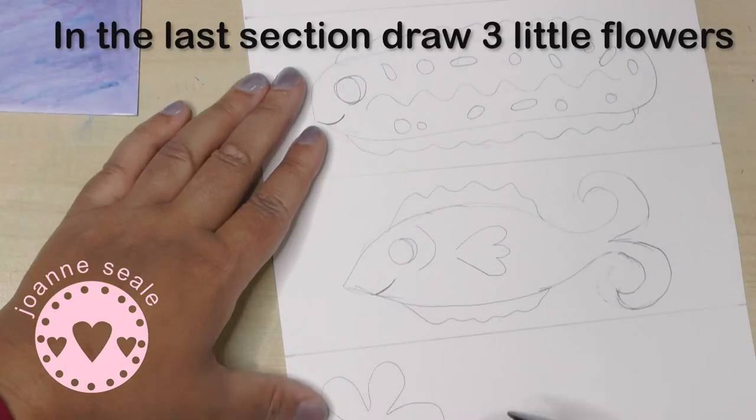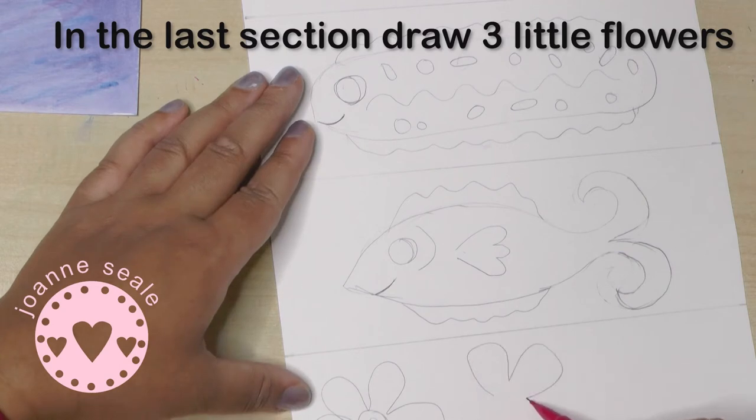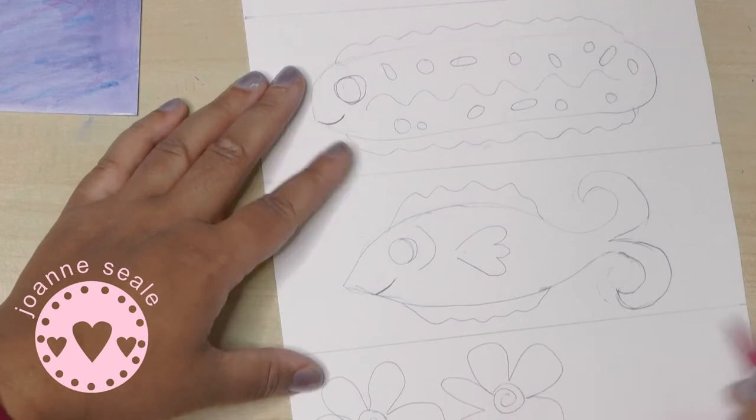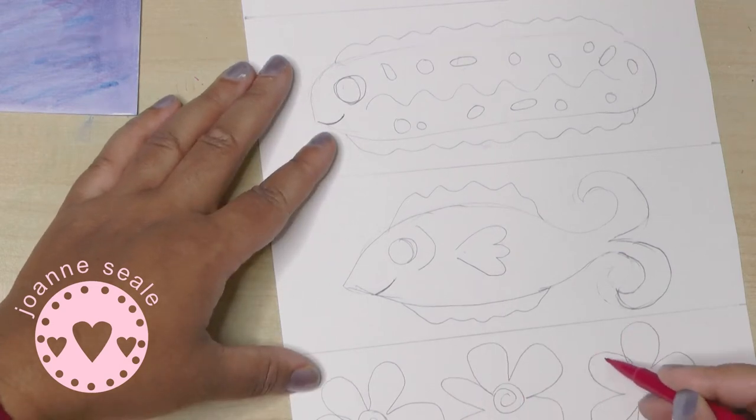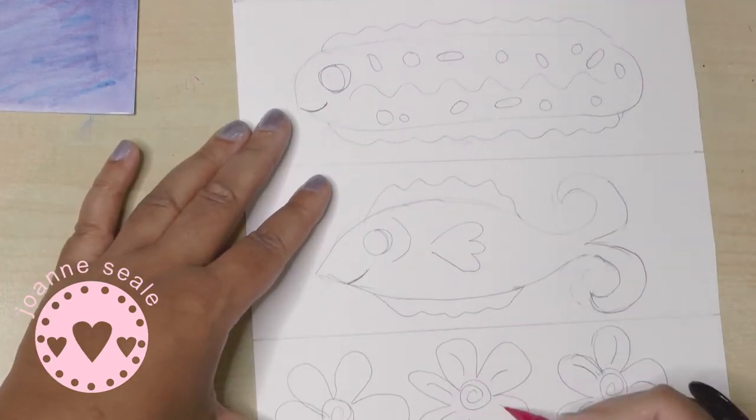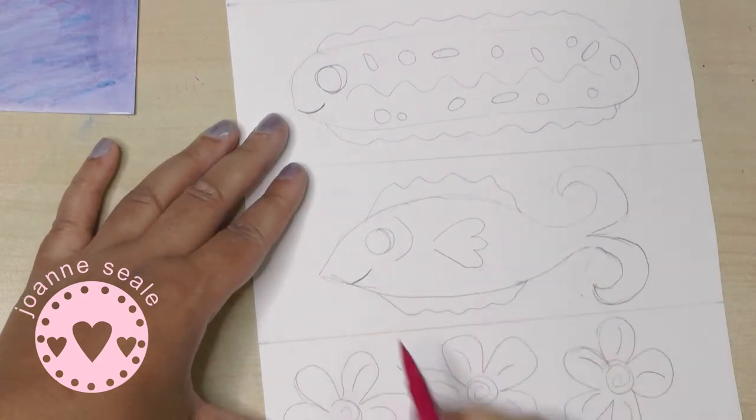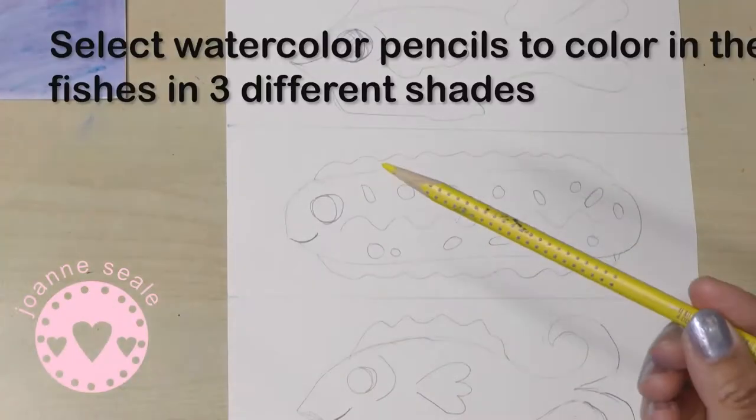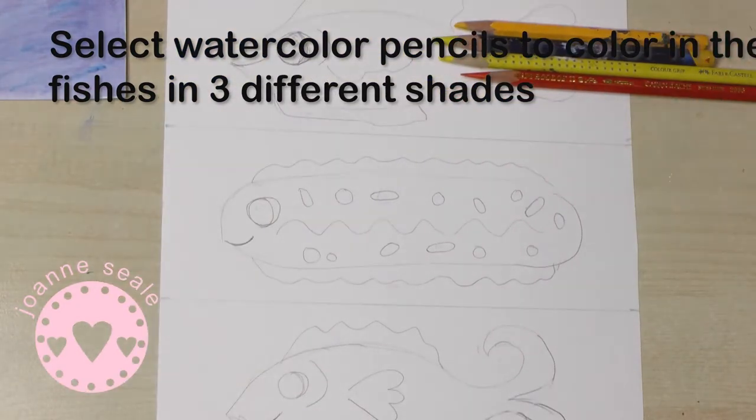So now I'm drawing the flowers, sorry that this is slightly off camera, I was zoomed in a little too much. But just draw any little flower shape and make sure you draw three of them that fill the last section of the page.